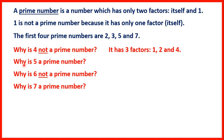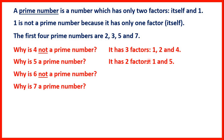So why is 5 a prime number? That's because it only has two factors. It's only in the 1 and the 5 times tables, not in any other times tables.